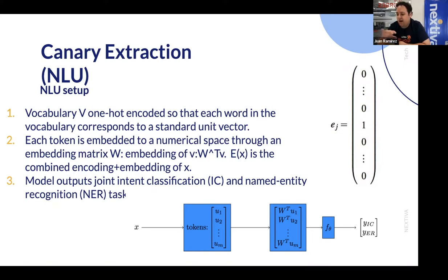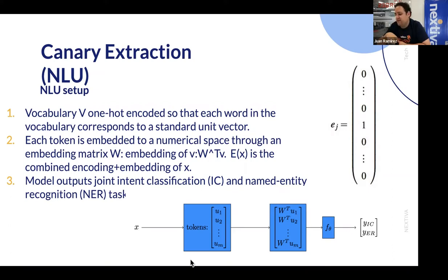The combined embedding of the sentence feeds into a function f(theta), which takes the embeddings and outputs an intent and a sequence of named entities. Those are the joint intent classification and named entity recognition tasks, respectively.